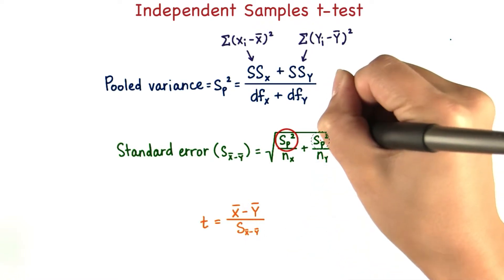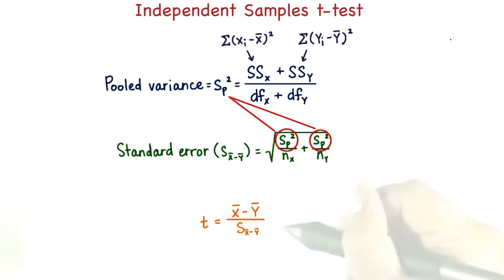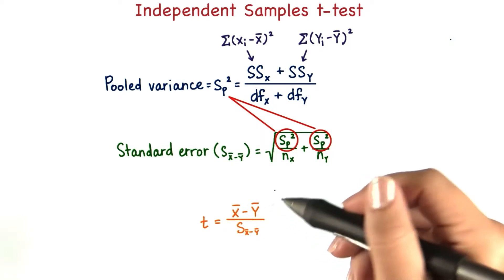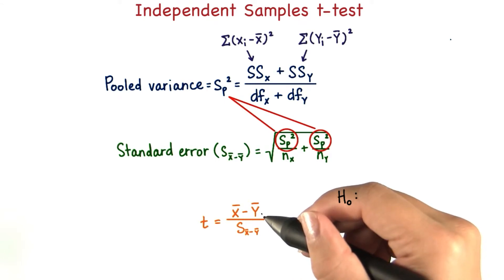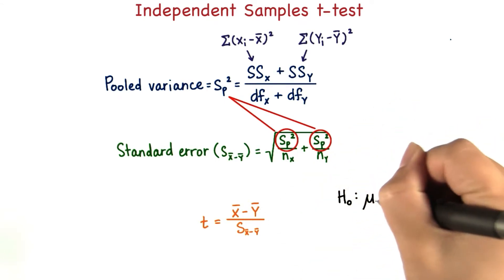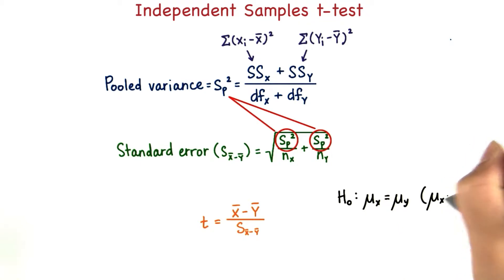Where these guys here are this pooled variance. Note that this is the t statistic when we expect that the true populations that these samples come from are the same. In other words, that the difference between the population parameters is 0.